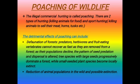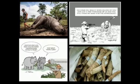As their population declines, the pattern of seed predation and dispersal is altered. Tree species with large seeds progressively dominate a forest while small-seeded plant species become locally extinct. Reduction of animal populations in the world leads to possible extinction. These are some of the images showing the poaching of wild animals.